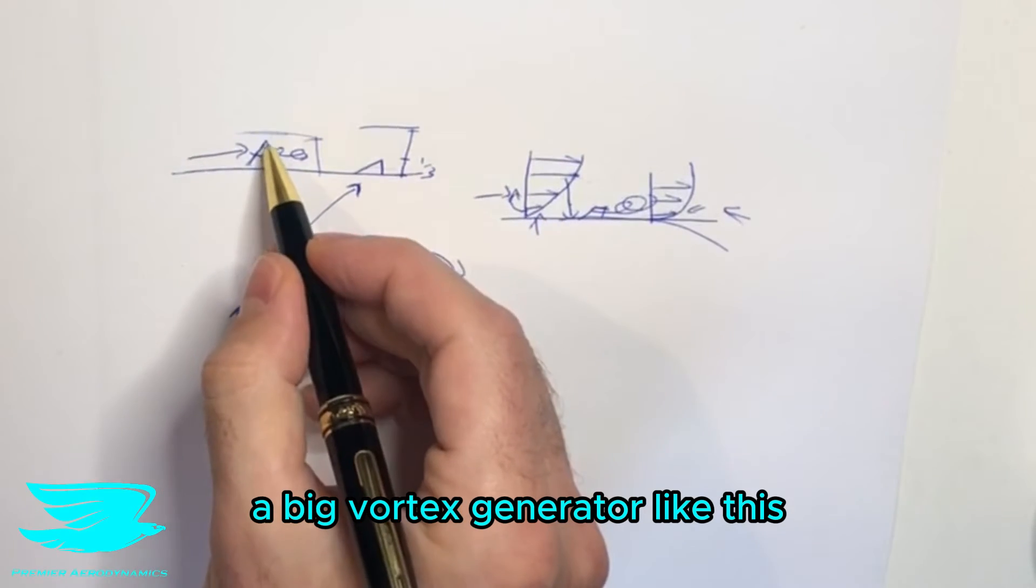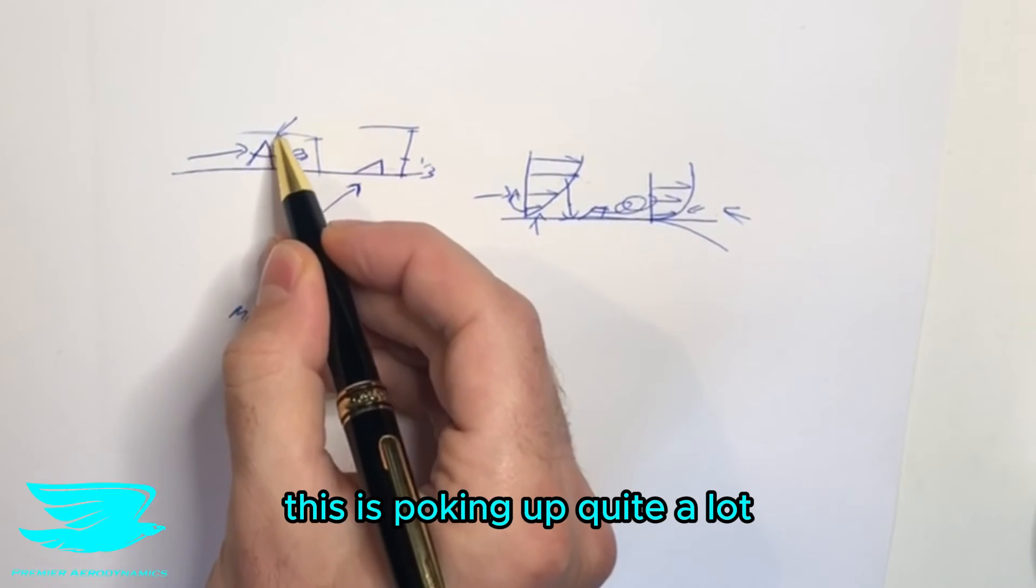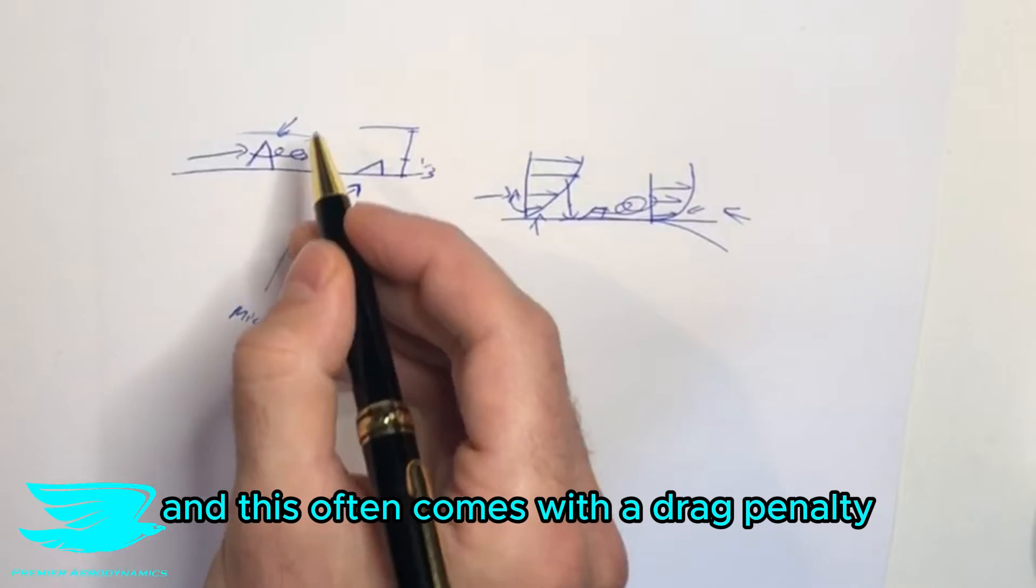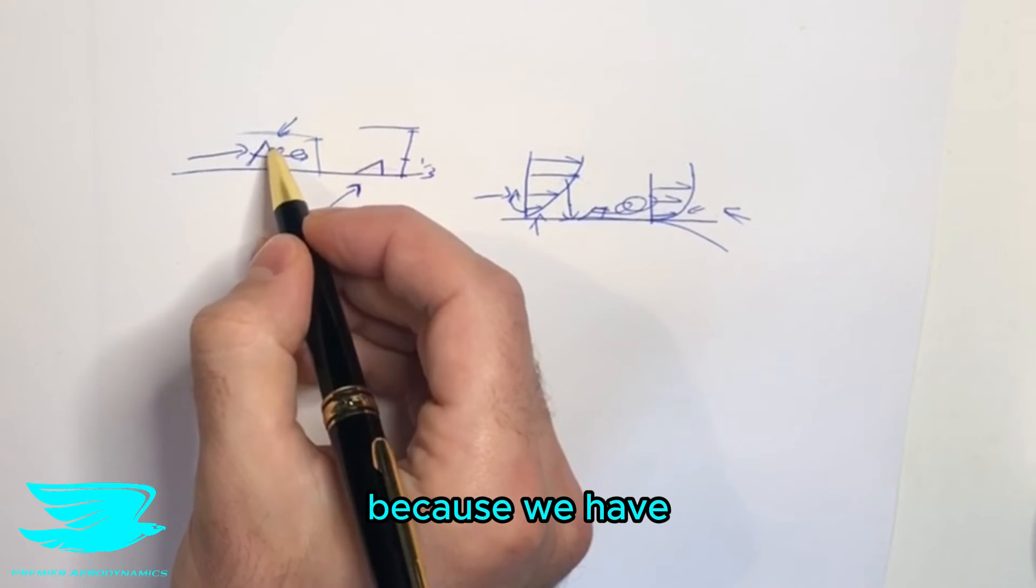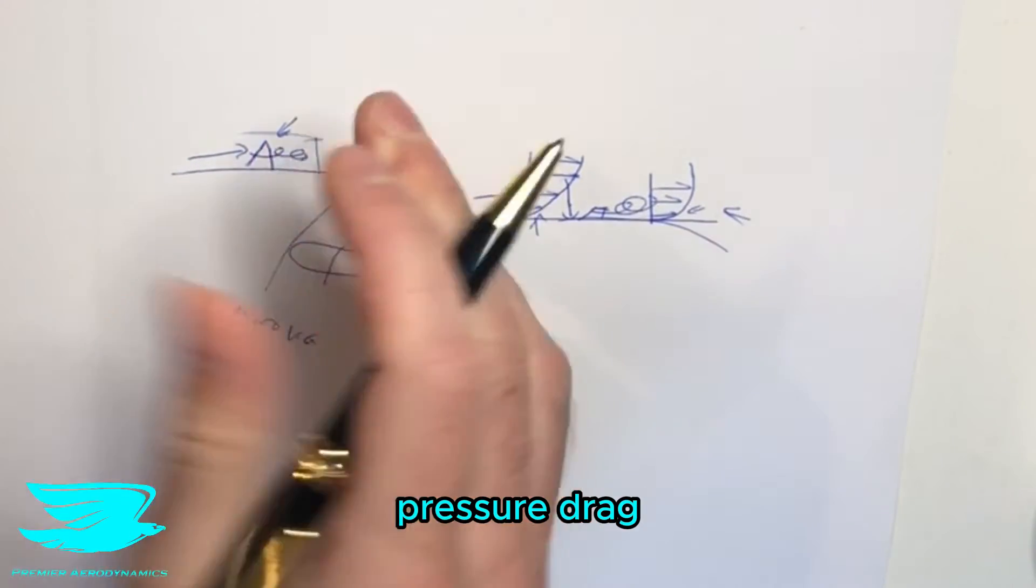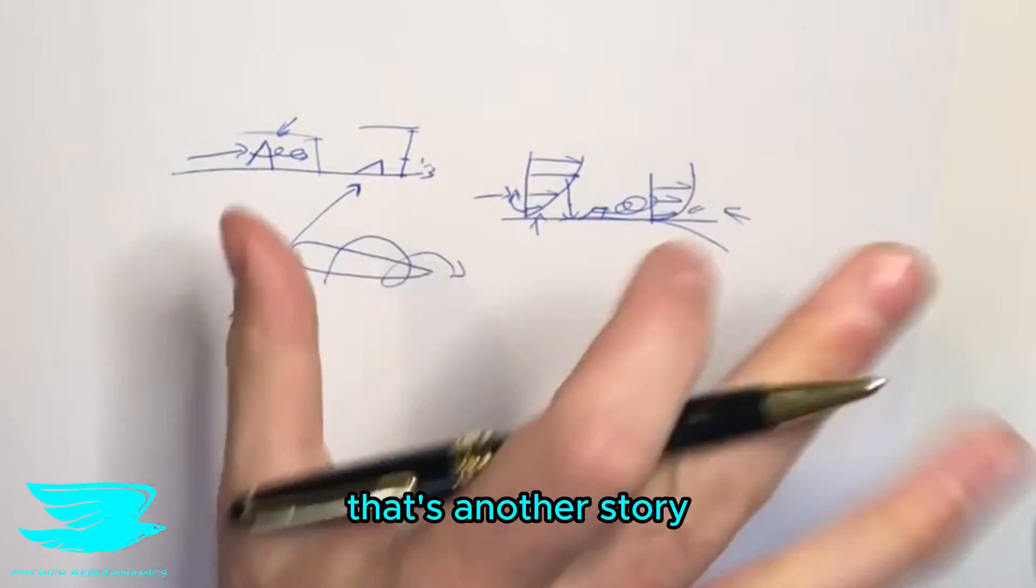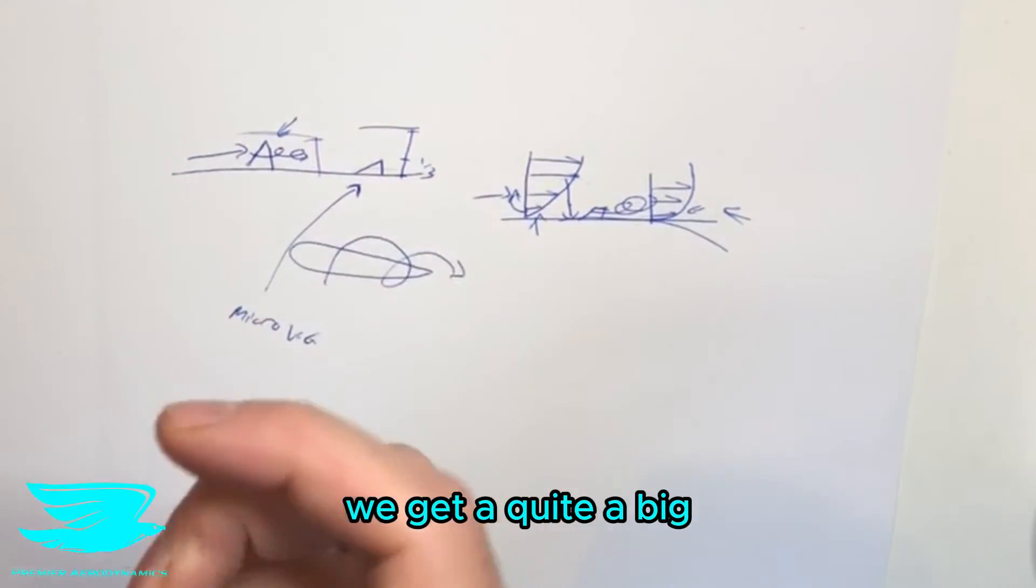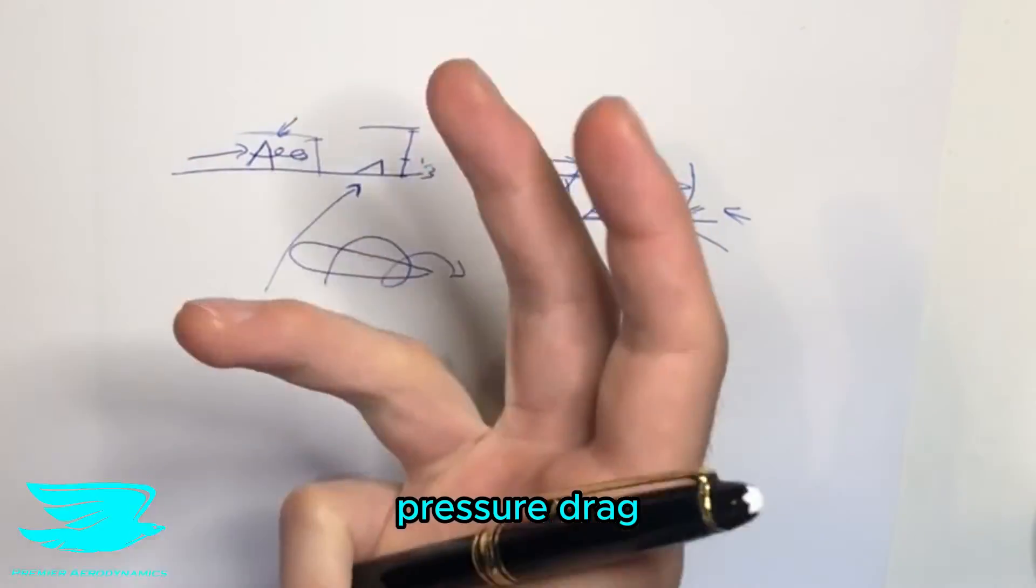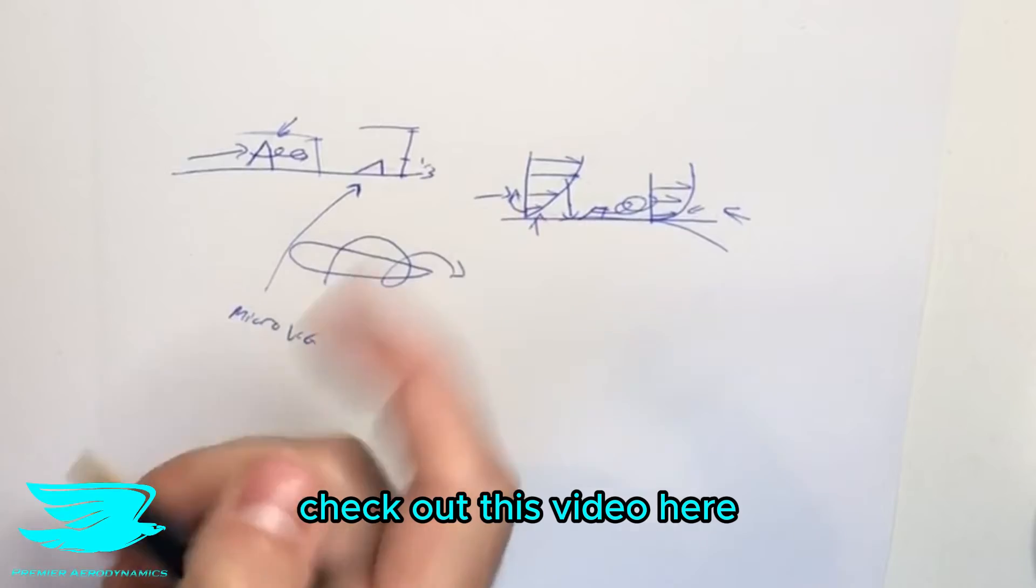And if we have a big vortex generator like this, this is poking up quite a lot. And this often comes with a drag penalty because we have quite a bit of pressure drag coming from this as well as some friction drag from this increased velocity down here. That's another story. But just because it's so big, we get quite a big pressure drag. If you don't know what pressure drag is, check out this video here.